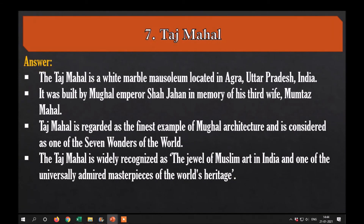Next, Taj Mahal. The Taj Mahal is a white marble mausoleum located in Agra, Uttar Pradesh, India. It was built by Mughal Emperor Shah Jahan in memory of his third wife, Mumtaz Mahal. The Taj Mahal is regarded as the finest example of Mughal architecture and is considered one of the Seven Wonders of the World. It is widely recognized as the jewel of Muslim art in India and one of the universally admired masterpieces of world heritage.